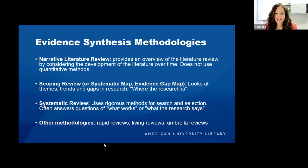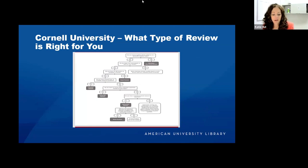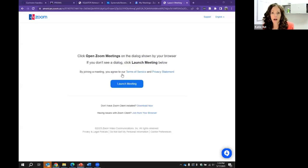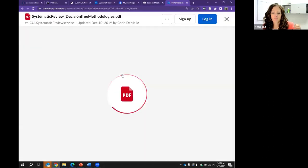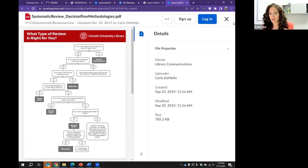The next slide is a decision tree from Cornell, which takes us through whether you need to do a systematic review.